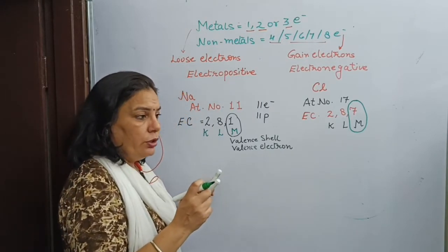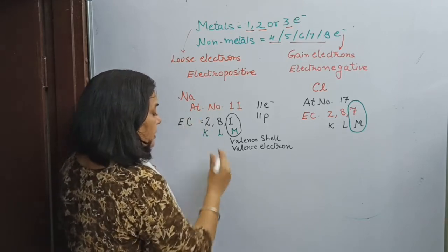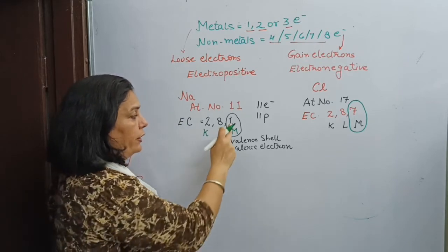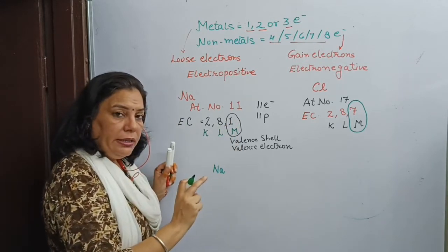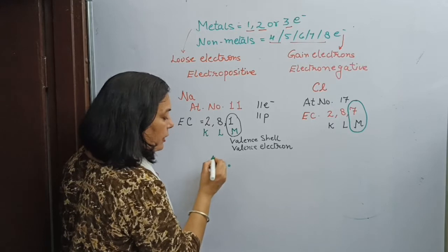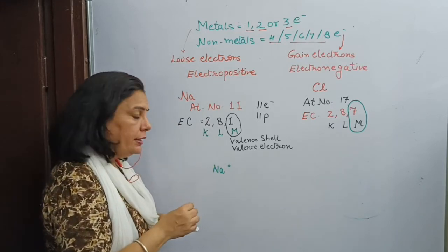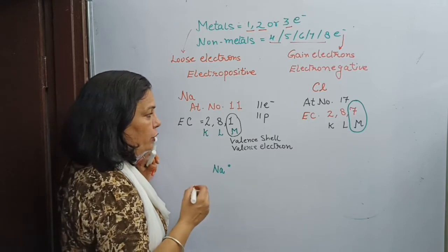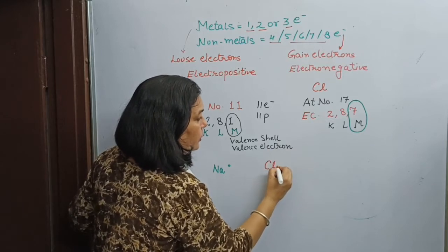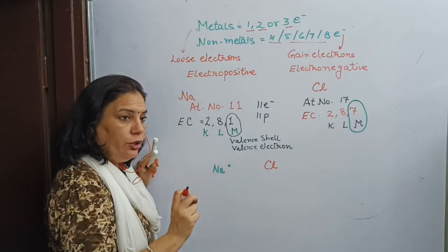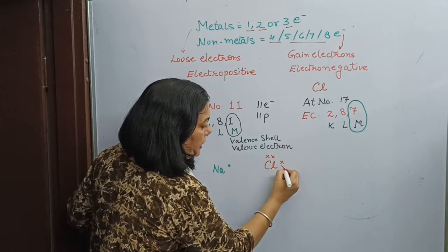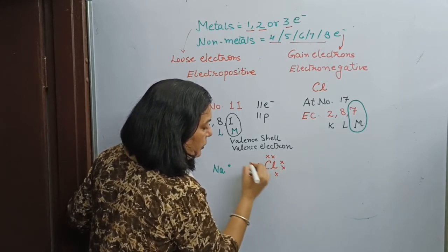Now let us draw the electron dot structure. While writing the electron dot structure, we always mention only valence electrons. Sodium has only 1 valence electron, and this electron can be shown with the help of a dot or a cross. For the electron dot structure of chlorine, chlorine has 7 valence electrons, so we need to show all 7 of these electrons.